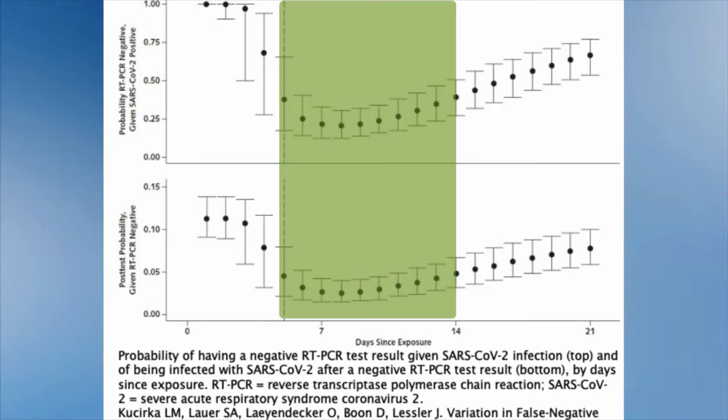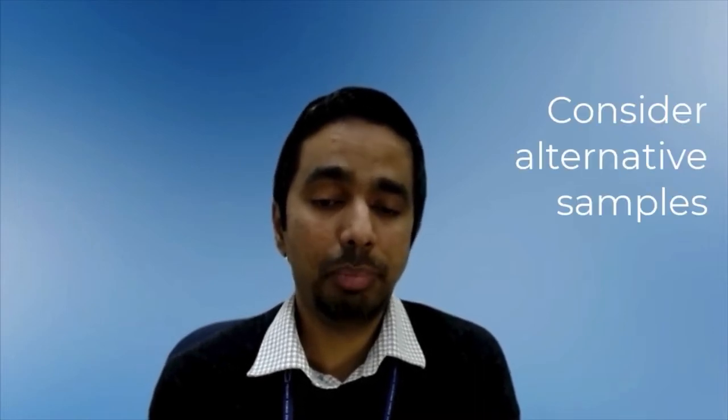Some patients stay persistently positive for long periods and continue to shed viral RNA for months. Once symptom onset has started, ideally you would test the patient within a week. If the patient is negative but has signs and symptoms of COVID and you need to establish a diagnosis, consider alternative specimen types. In some cases, the virus is no longer present in the upper respiratory tract, and you might want to test a sputum or tracheal aspirate sample. We have had patients with no detectable virus in their nasopharyngeal or nasal swabs but extremely high levels of virus in their sputum samples.